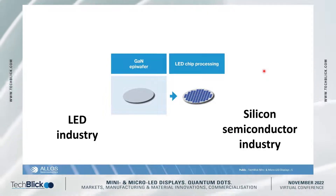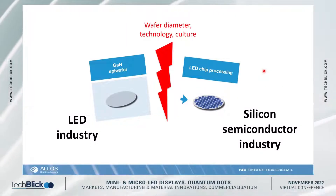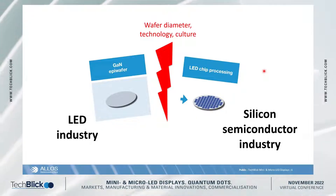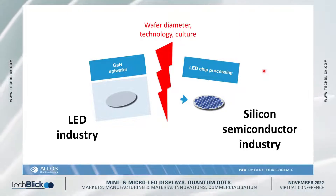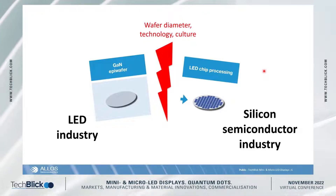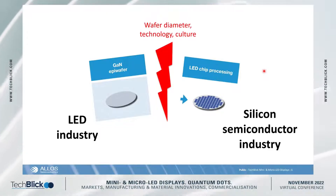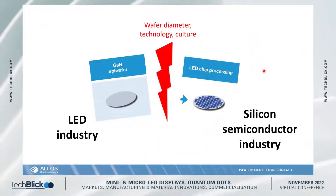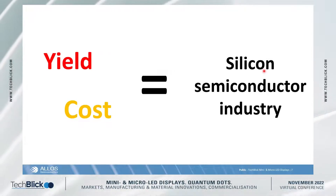These two industries need to work together, but that is actually quite problematic because they have different wafer diameters. The LED industry is used to 100 millimeter — that's the standard size today — some are at 150 millimeter, and very few are at 200. Whereas in the silicon industry, for advanced nodes and high-yield manufacturing, you only talk about 200 and 300 millimeter. There's also a culture mismatch: when I speak to CEOs in the LED industry, they talk about the three most important things — throughput, throughput, throughput. In the silicon industry it's very different: it's all about yield, yield, and yield. And this yield aspect directly translates into cost — if you have bad yield, you have high cost.